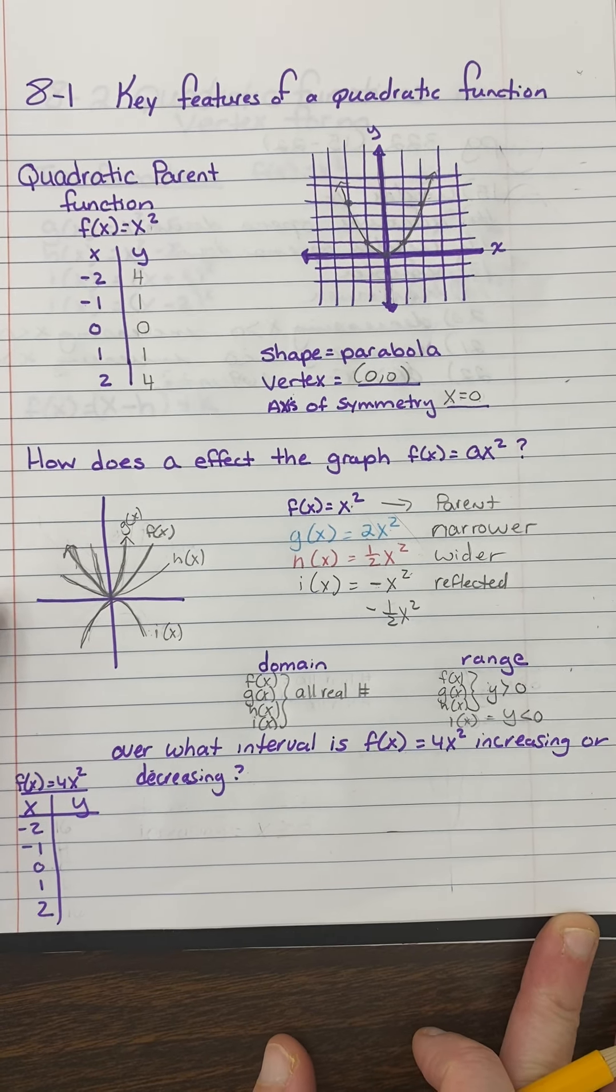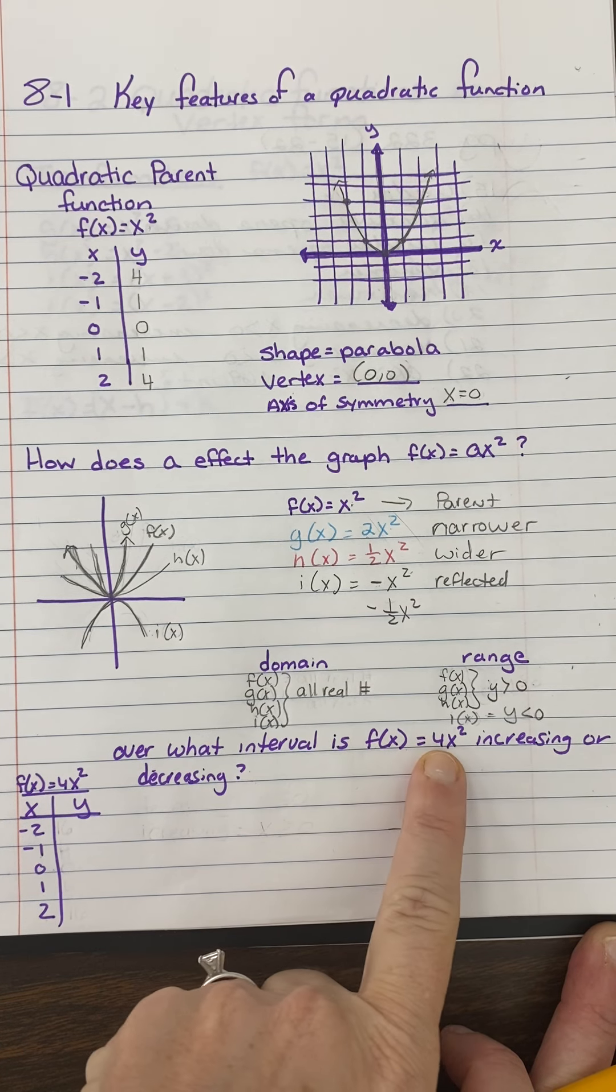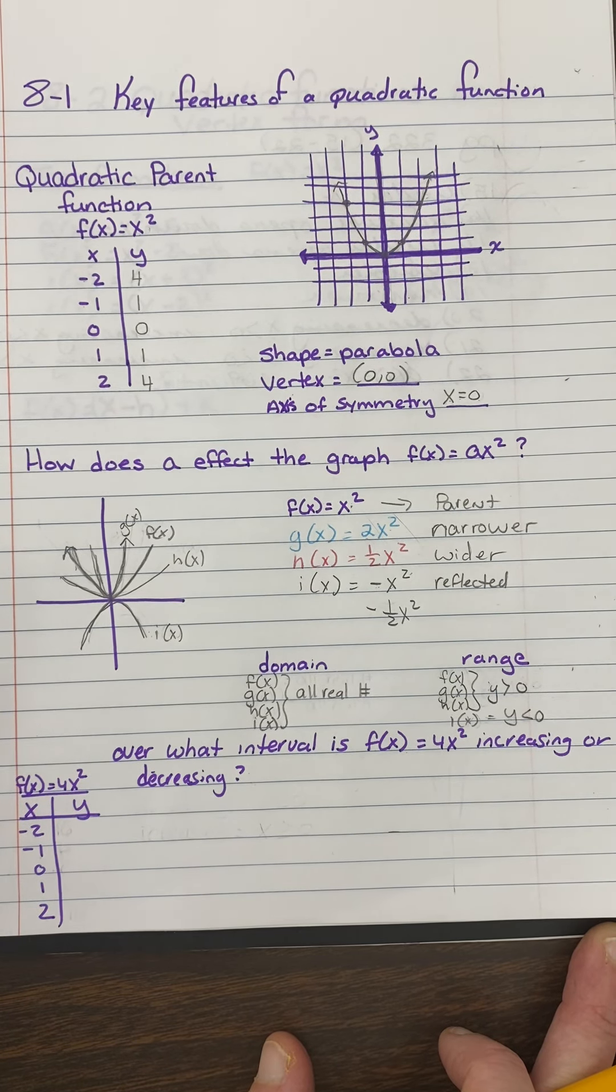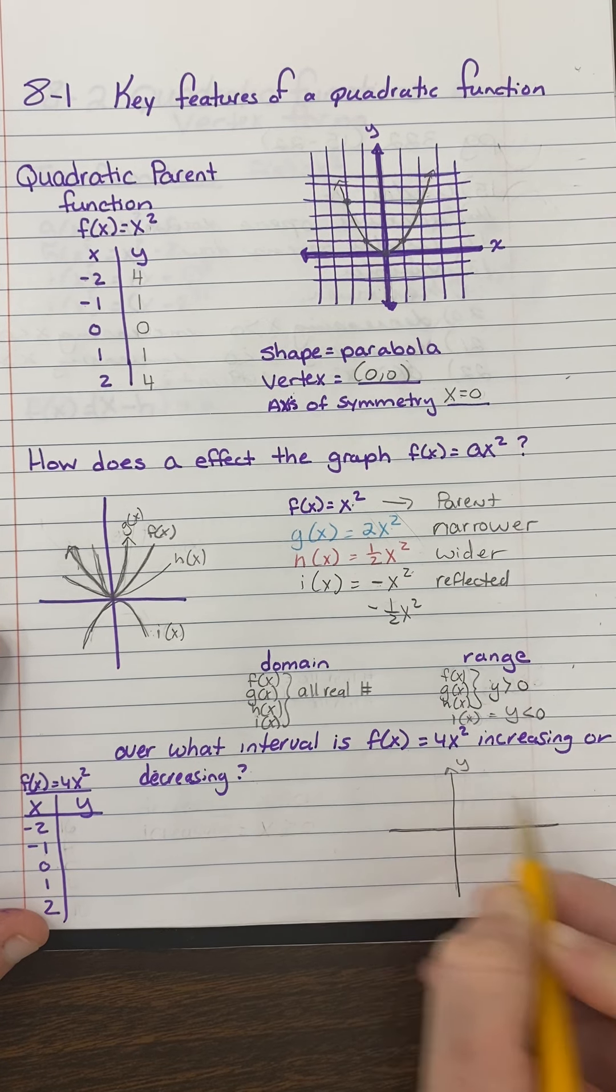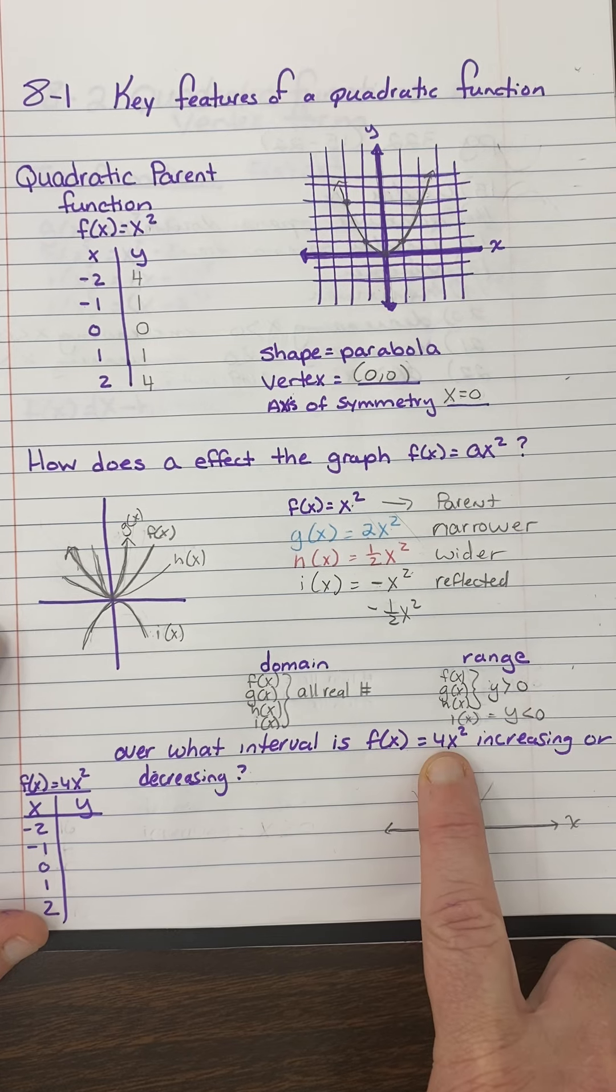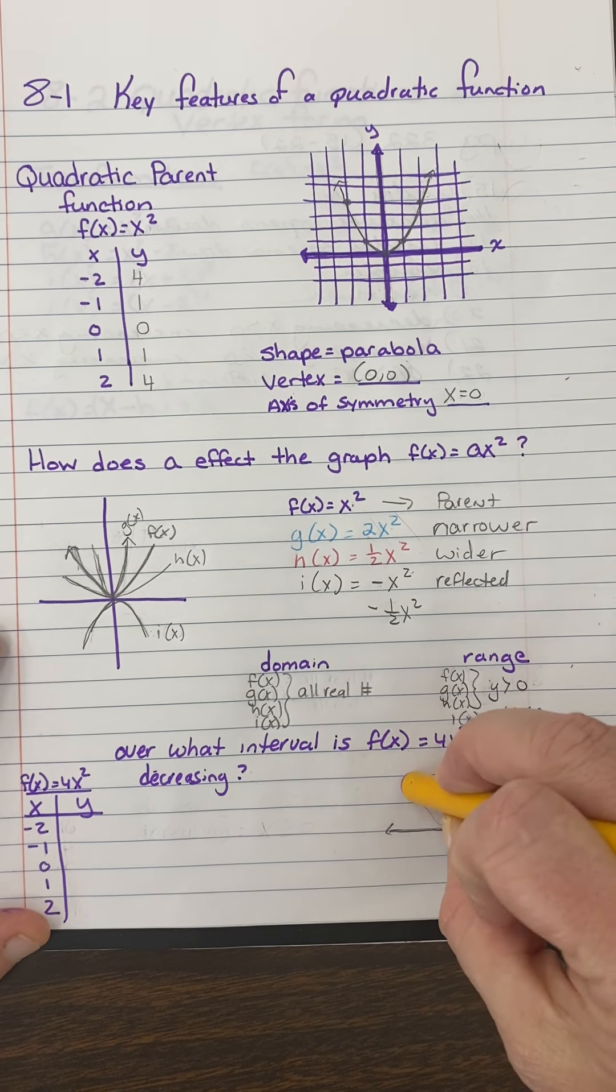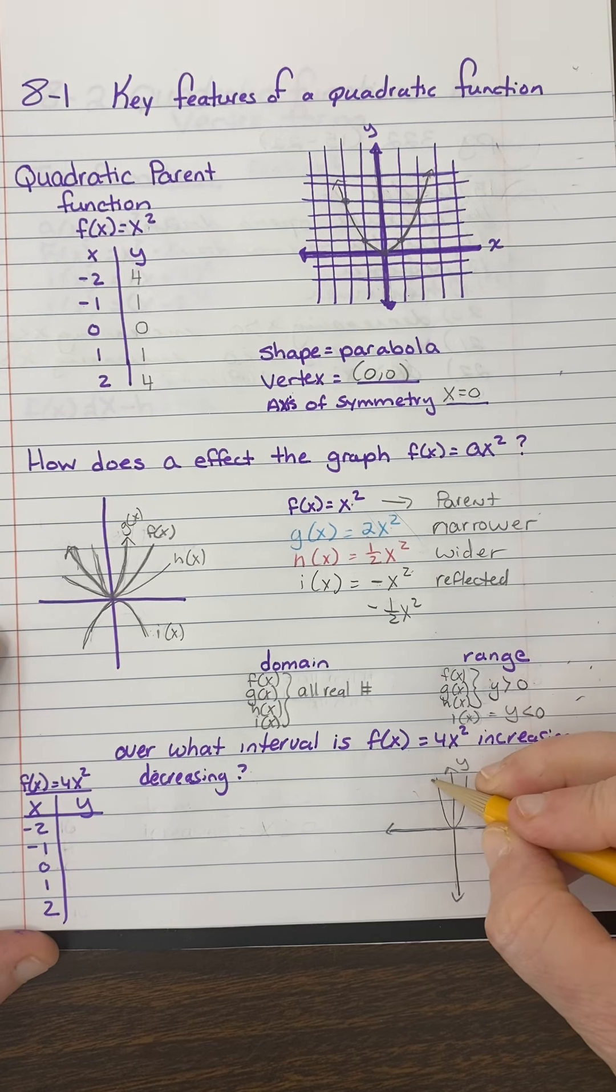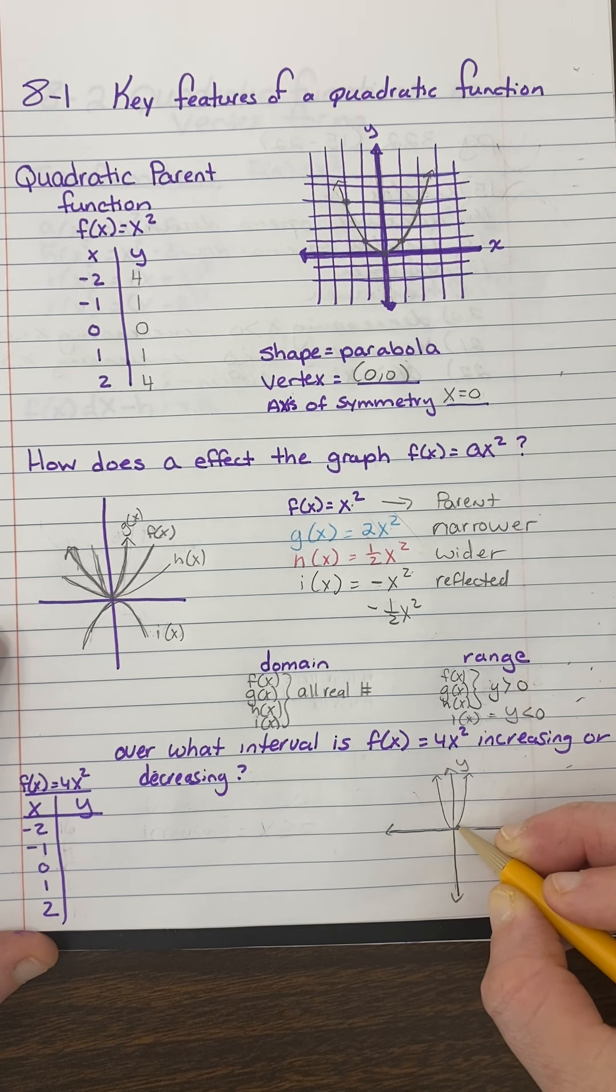Now let's look at this bottom part where it talks about over what interval is, and I gave you a new f of x, increasing or decreasing. Well, you should be able to figure it out just by looking at here. But sometimes if you can't, you can look at a table. So I want to talk to you about what this means. If I say, what is the parent function, you should already kind of be able to draw a little sketch of that. This is the parent function. It looks something like that. Well, if I tell you that f of x is 4x squared, what did we say that does to the parent function? It makes it 4 times skinnier. So f of x is going to look something like this.